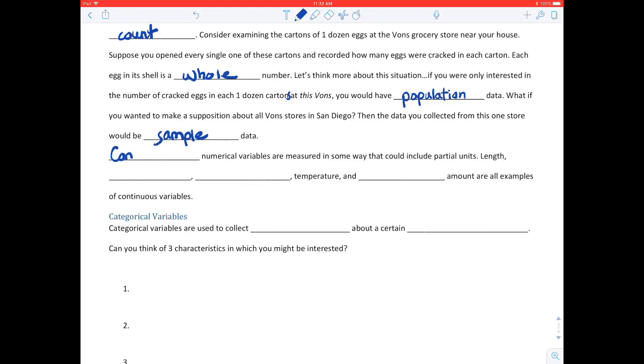Now, continuous numerical variables are measured in some way that could include partial units. That's the easiest way to think about it. So length, you know, you could have, if you go in inches, you could have a partial inch. Height would be one, weight is another one, maybe dollar amount, temperature. Those are all continuous measures, although dollar amount probably could go either way, depending on if you were thinking just dollars themselves, right, instead of cents.